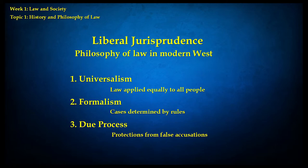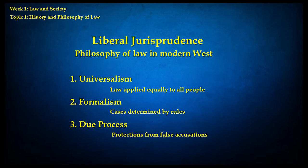Here are three major principles of liberal jurisprudence. First is universalism — the idea that law should be applied equally to all people, regardless of birth, class, or where they come from. If you live under this legal system, the law should apply to you the same as to the next person. Second is formalism — the idea that cases should be determined by rules, not by the whims of the ruler or the personal attitudes of the judge. If you know the rules and what someone has done, you should be able to accurately predict the outcome of the case.